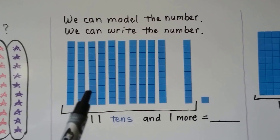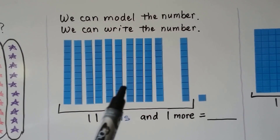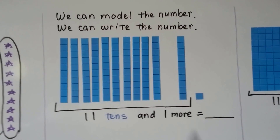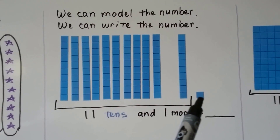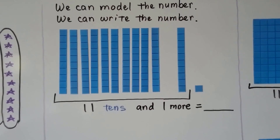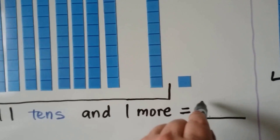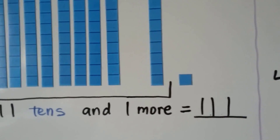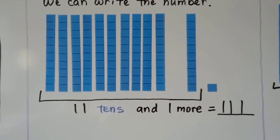We have 1, 2, 3, 4, 5, 6, 7, 8, 9, 10, 11 tens, and one little tiny one more. 11 tens and one more would be 111.